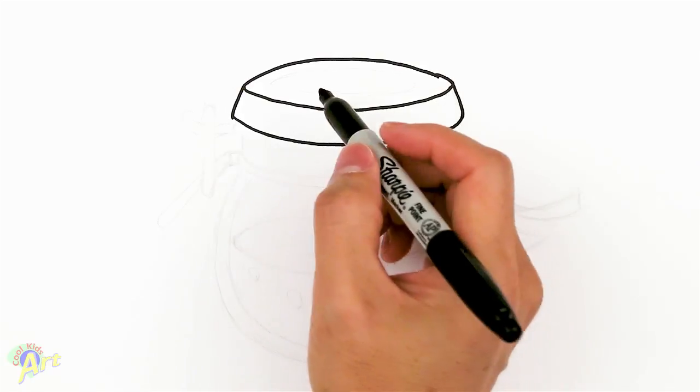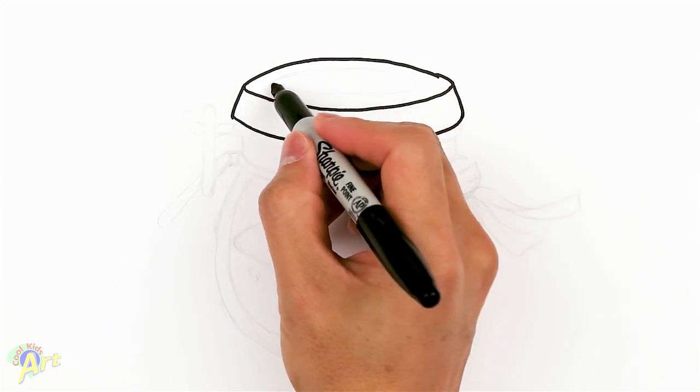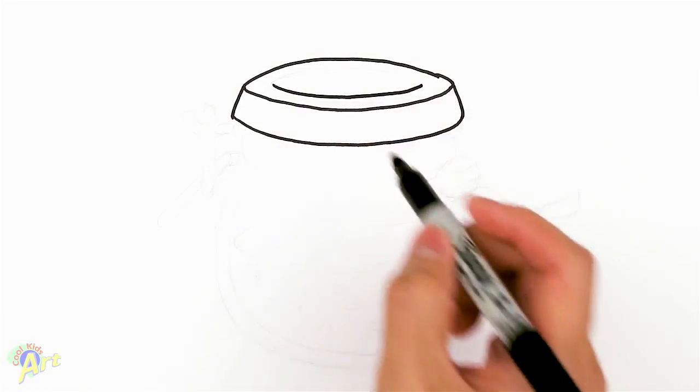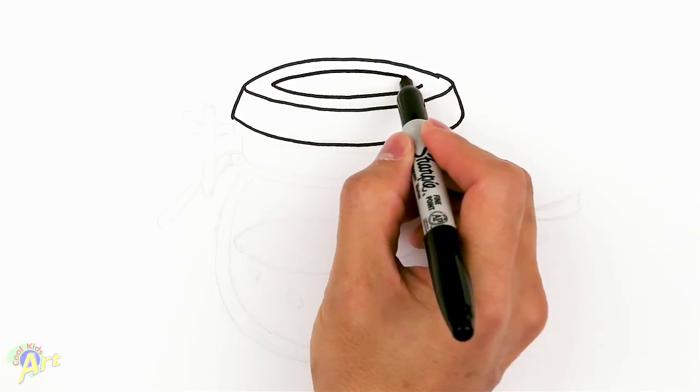Alright, and then on the inside, on top of the lid, there's going to be a circle, so we're going to draw another line, and then now draw the opposite curve, so that'll give us some detail.